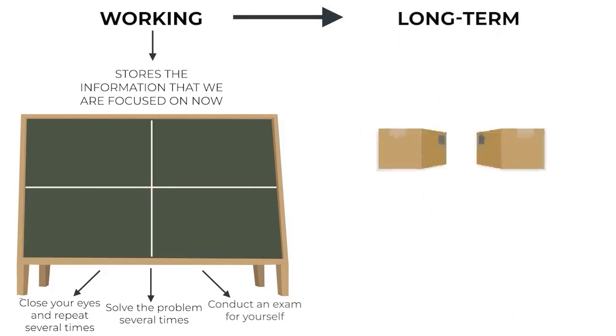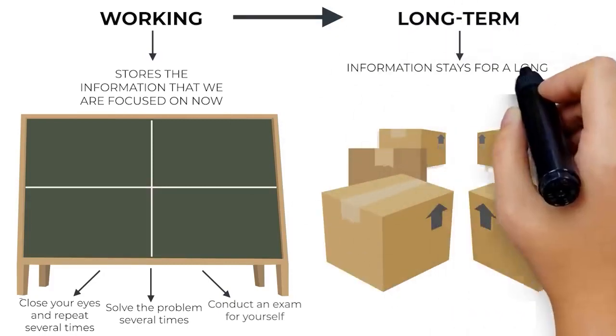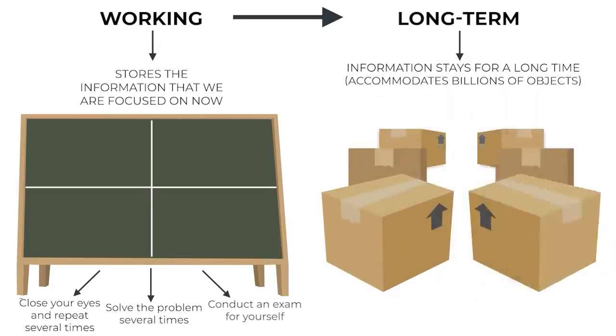Long-term memory can be compared to a warehouse where information stays for a long time. It can hold billions of objects. And the more often the information is repeated, the closer to the entrance it is and the easier it is to recall. So spaced repetition will be effective, for example, when you repeat information every day.